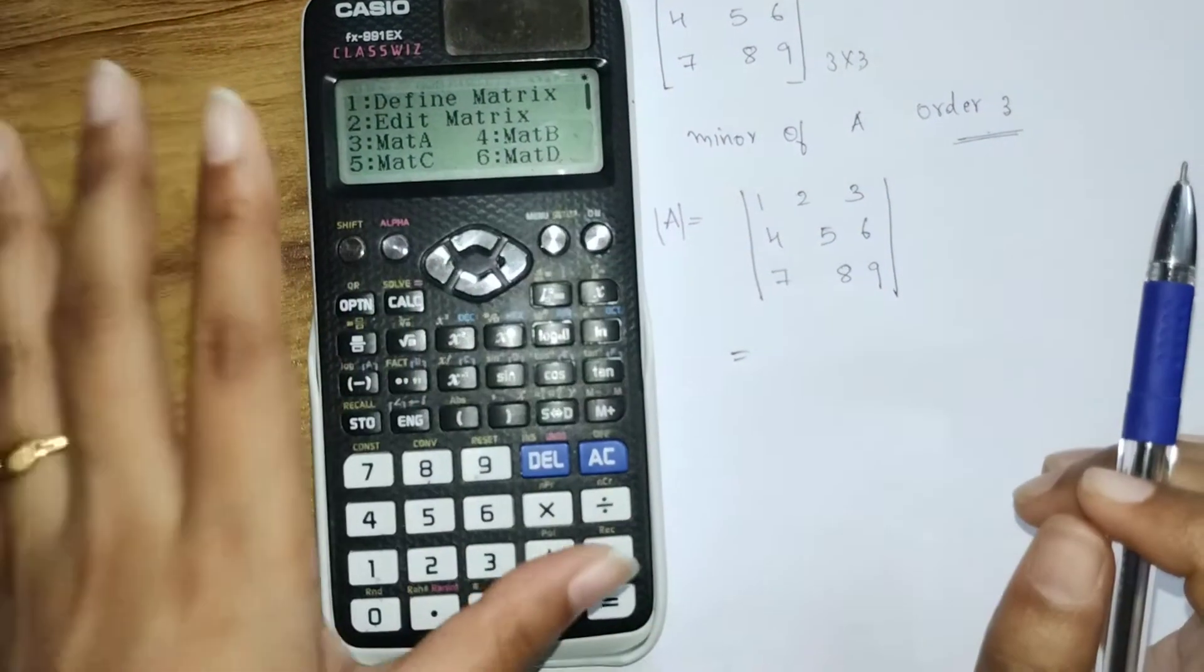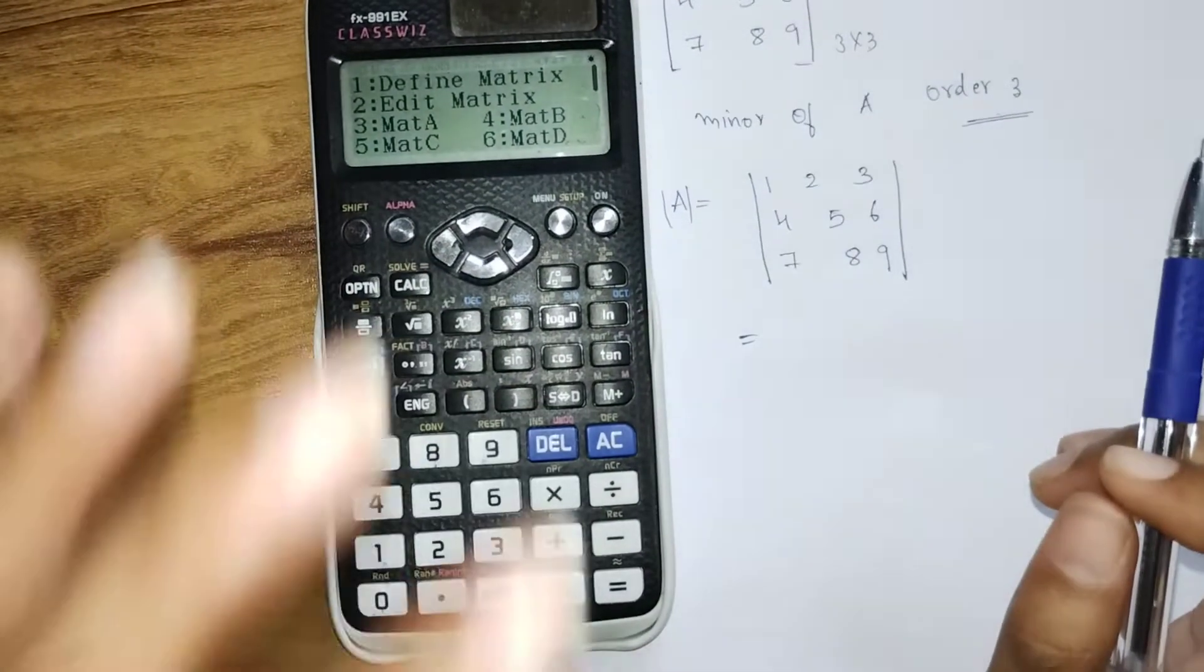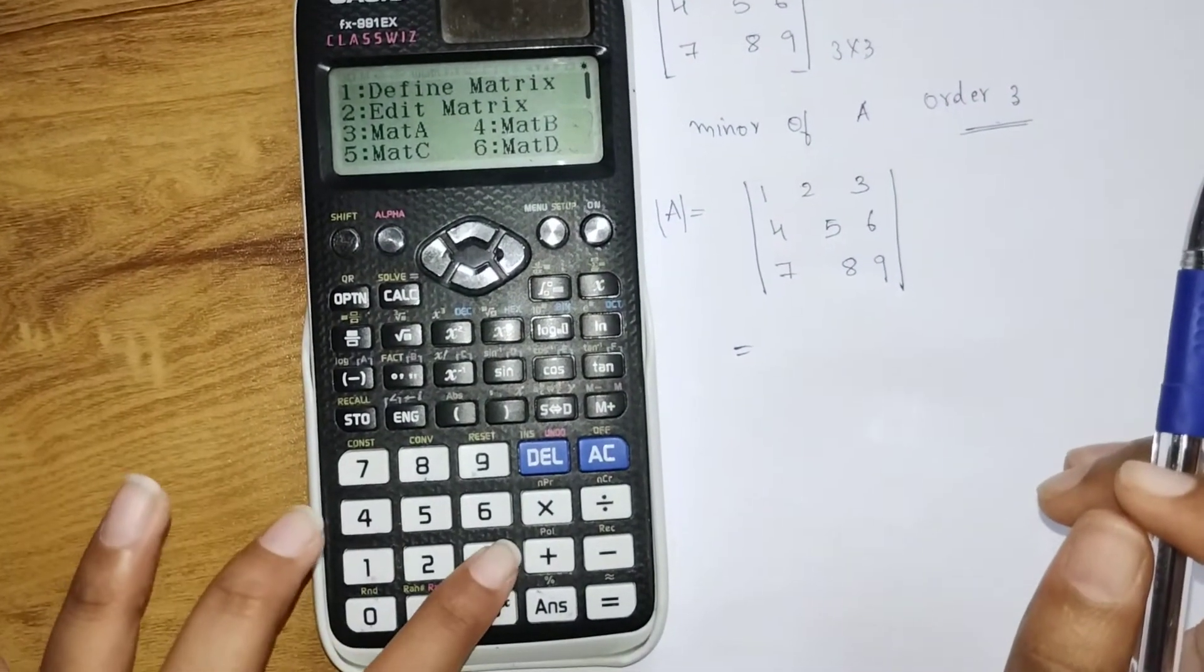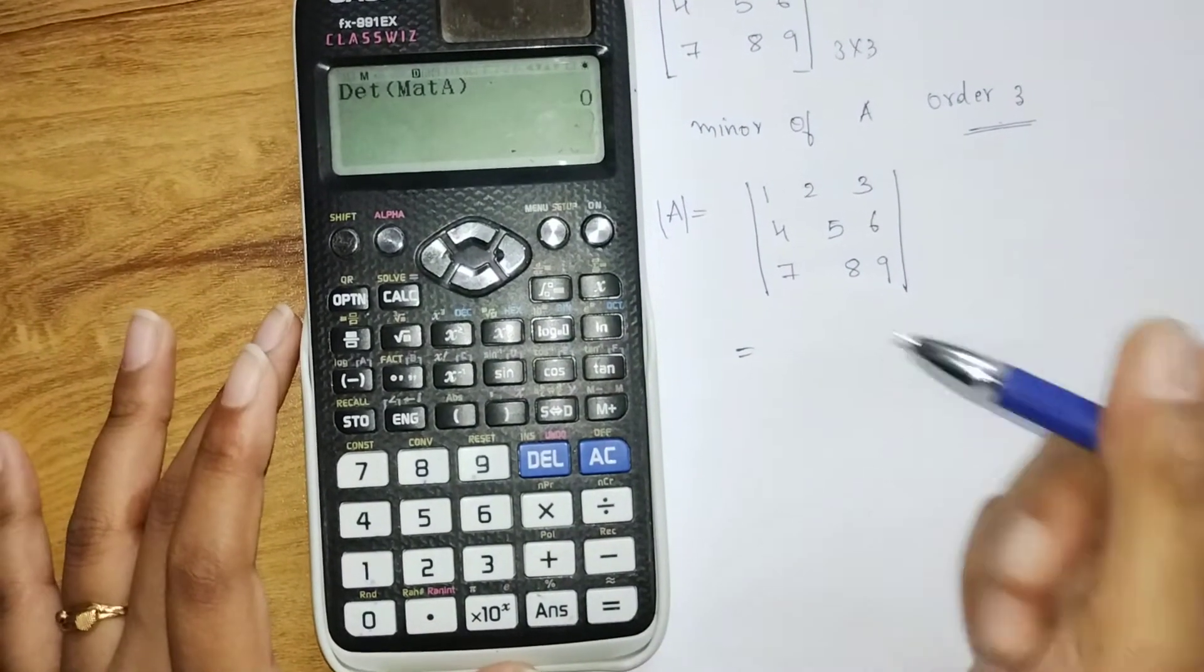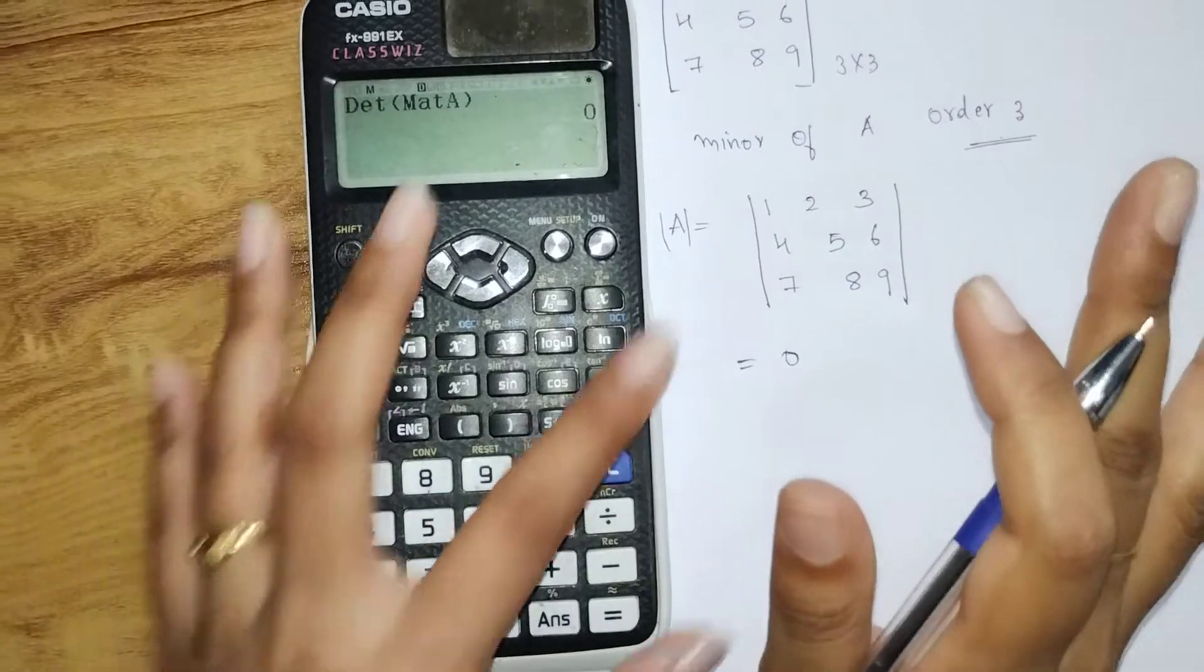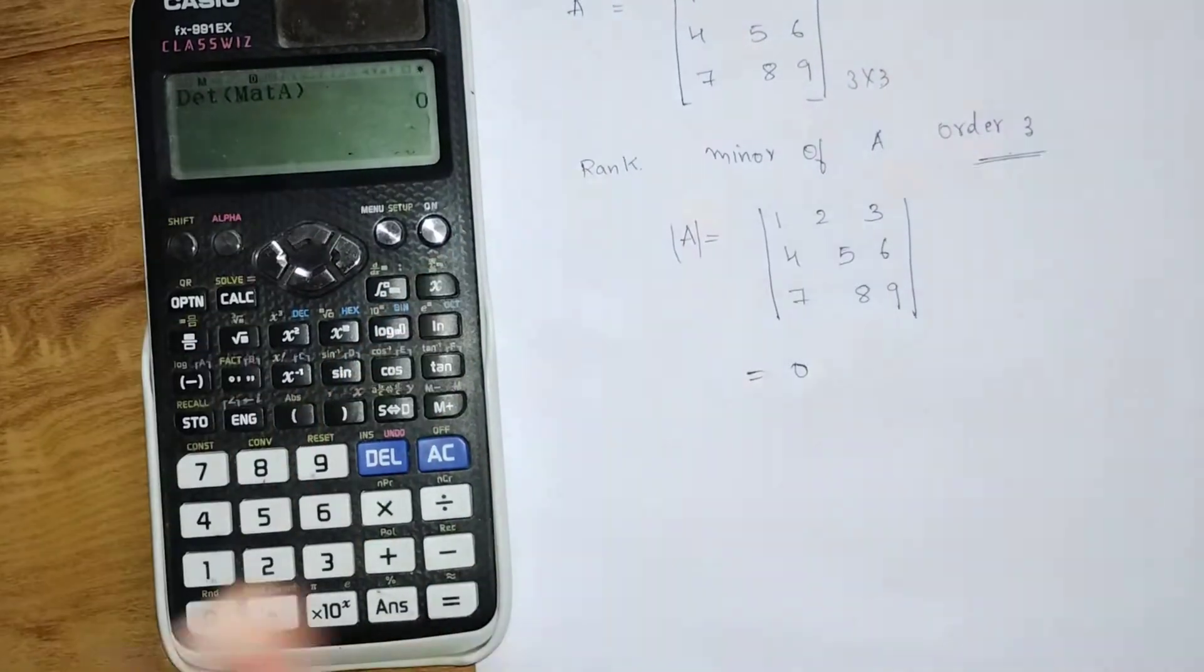That is Mat A - whatever we defined, we are calculating the determinant of it. Close the bracket, equals. So we got 0. Now the rank of the matrix is not the order 3.